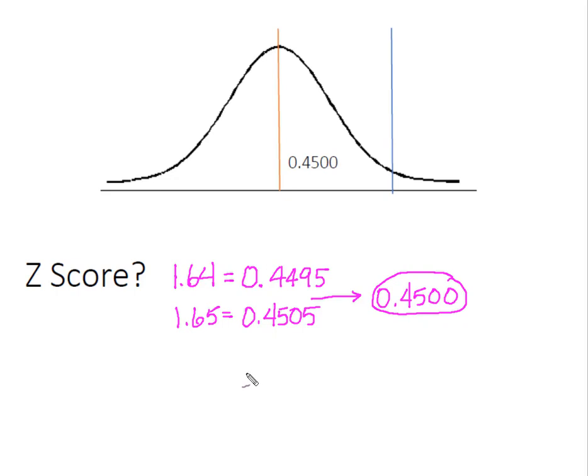I'm going to take the two z-scores, add them together and then divide by 2, and I'm going to end up with 1.645. So I know that I need to move 1.645 standard deviations above the mean in order to have 45% of the data between the mean and this point on the curve.